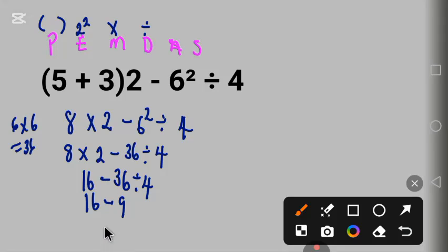Finally, 16 minus 9 equals 7. This is the correct answer.